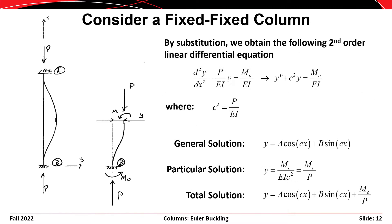Again letting c² = P/EI, the solution to this differential equation has a general solution and a particular solution. The general solution is A·cos(cx) + B·sin(cx), and the particular solution gives y = M₀/p. So the total solution is y = A·cos(cx) + B·sin(cx) + M₀/p.